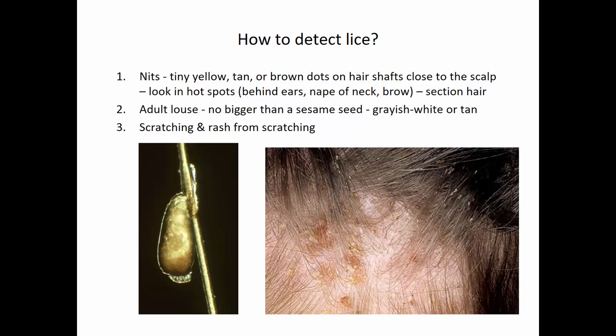It's more common to see nits than live lice on the scalp. Lice move fairly quickly, hide, and run away when exposed to light, aligning themselves with the hair. Further from the scalp you may see white or clear shells still attached to the shaft — nits from which the louse has already hatched. These are usually easier to spot than ones with a little black center, meaning a louse is still inside. The itching is due to a reaction to lice saliva and may not start right away.